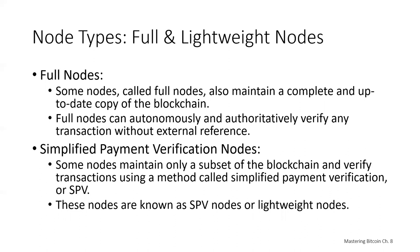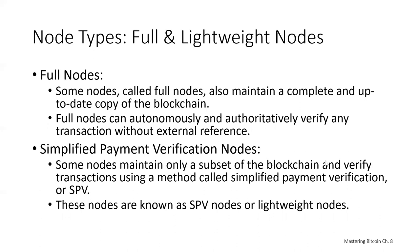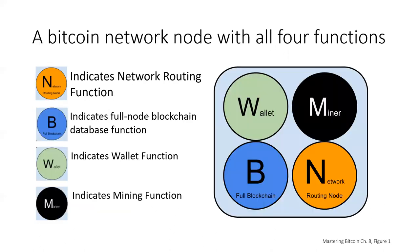In the full node example on this diagram, the full node blockchain database function is what we saw in that blue circle with the letter B. SPV nodes would not have this blue circle because SPV nodes don't maintain a full copy of the blockchain.